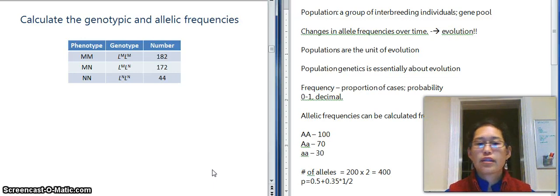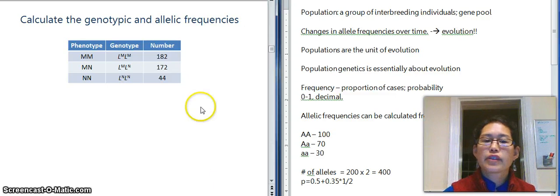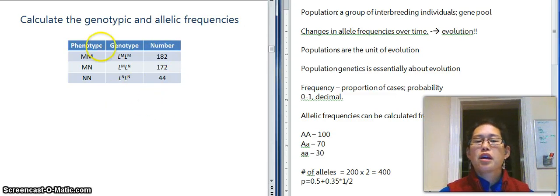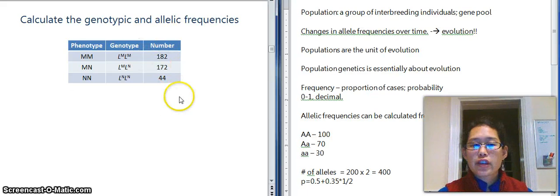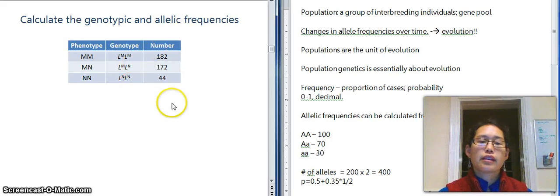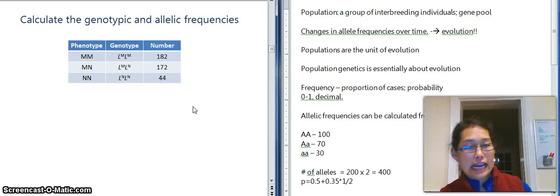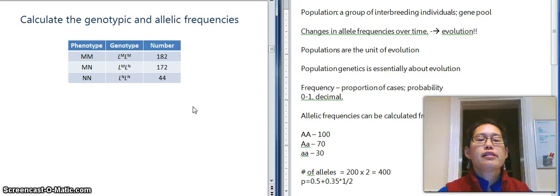Okay now so what I want you guys to do is use this example to calculate the genotypic and allelic frequencies here. So these are blood types and these are the number of individuals with various blood types and I want you to calculate the genotypic and allelic frequencies. And you can pause it now and do that. And actually maybe what I'll do is just end this video here and then we'll go over the answer for the next one.